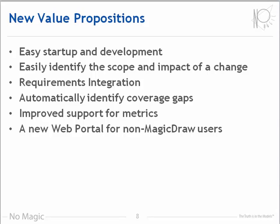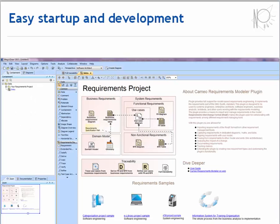It's now easier than ever to start and develop a requirements project. Requirements plugin easily identifies the impact of changes to requirements and model elements. We now support requirements management in all model types, not just SysML. Requirements plugin will automatically identify coverage gaps in your relation maps. The Requirements plugin has significantly improved the custom metrics and provides predefined coverage tables for requirements to design and for requirements to test cases. The Requirements plugin adds a new web portal specifically designed for participants who do not know MagicDraw. After installing the plugin, select File, New, and choose the Requirements project template. This will create a new project with a predefined package structure and a set of diagrams.